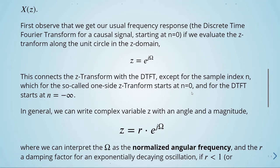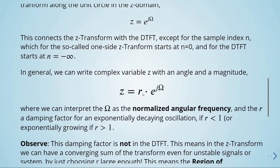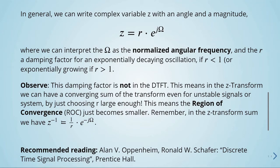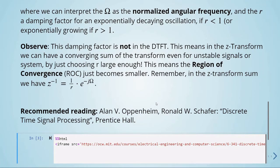We can write the complex variable z with an angle and magnitude. Here, Ω is the normalized angular frequency and r is a damping factor — exponentially decaying if r is smaller than one, or exponentially growing if r is greater than one. This damping factor is not present in the DTFT. In the Z transform, we can have a convergent sum even for unstable signals or systems by choosing r large enough, which means the region of convergence (ROC) becomes smaller. In the Z transform sum, z to the power of minus one equals one over r times e to the power of minus j·Ω.